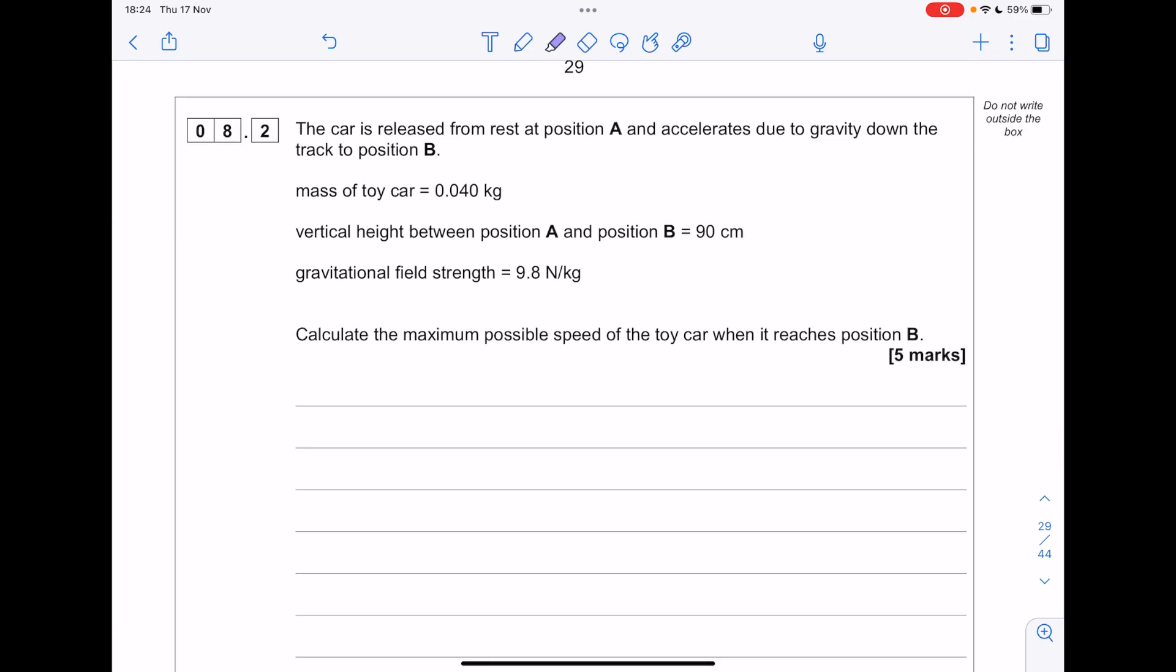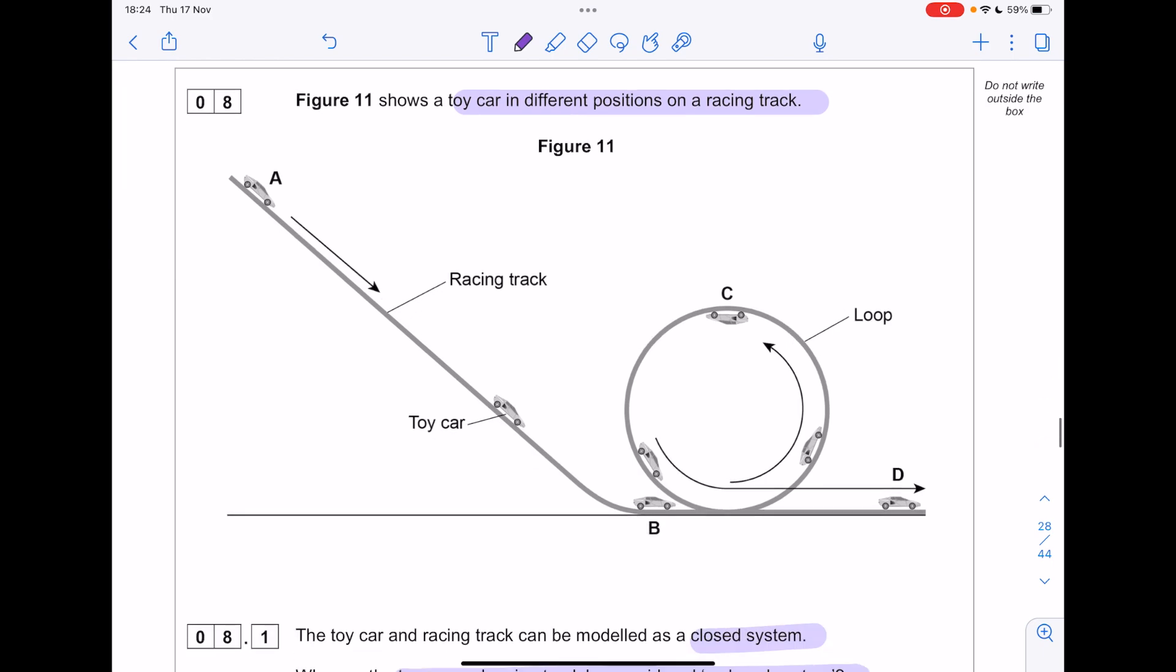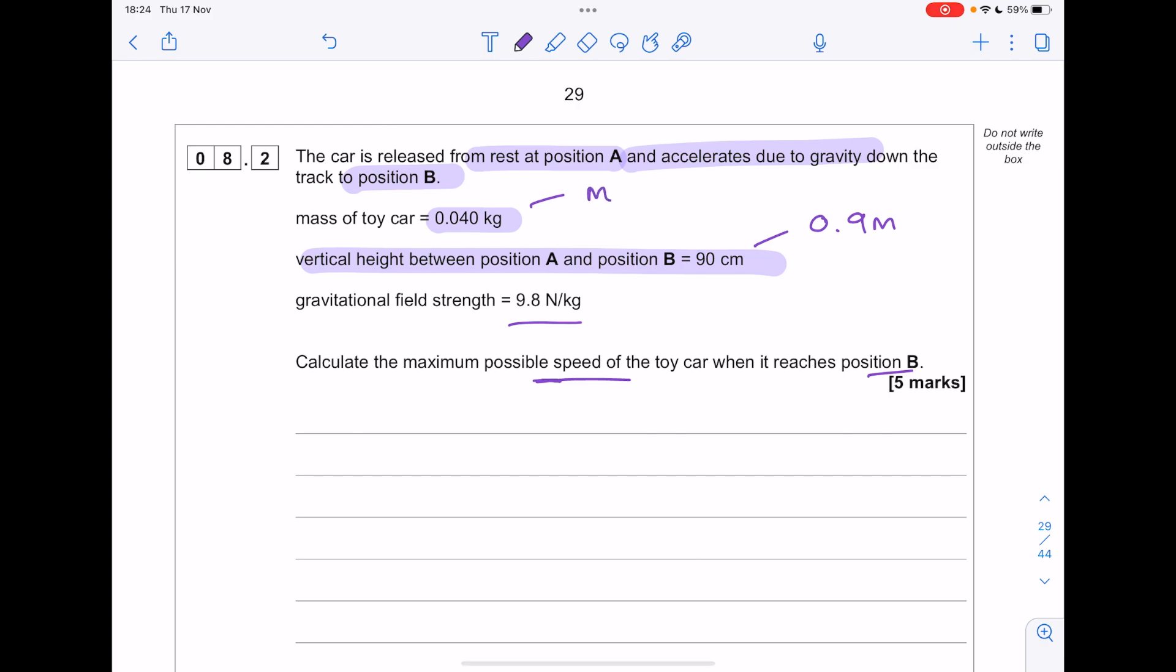The car is released from rest at position A and accelerates due to gravity down to position B. The mass of the car is this. The vertical height between position A and B is this. I'm going to put that straight into meters. The gravitational field strength is this. Calculate the maximum possible speed of the toy car when it reaches position B. So we're going from A to B. Let's label what we've got. We've got mass. We've got height. We've got gravity. We're being asked to find speed.